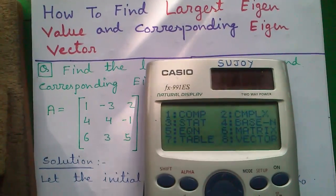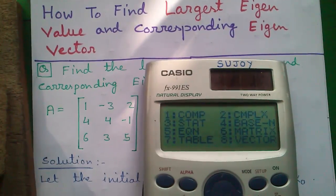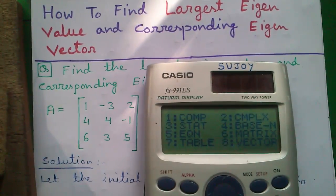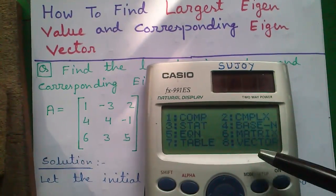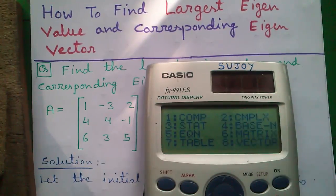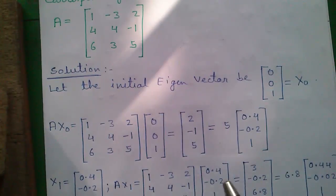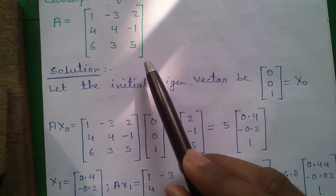Hello my dear friends, I am Sujoy and today I will tell you how to find out the largest eigenvalue and the corresponding eigenvector of a 3 by 3 matrix very easily using the mode 6 matrix mode of this Casio FX-991ES calculator. So let's start. Here is our matrix A, a 3 by 3 matrix.